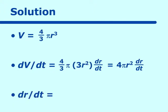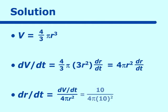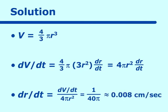Solving for dr/dt gives us dV/dt over 4π r². We know dV/dt is 10 and r is 10, so filling those in and reducing, we get 1 over 40π, which is approximately equal to 0.008 centimeters per second — which is pretty slow. This is how you would solve a balloon-type problem.